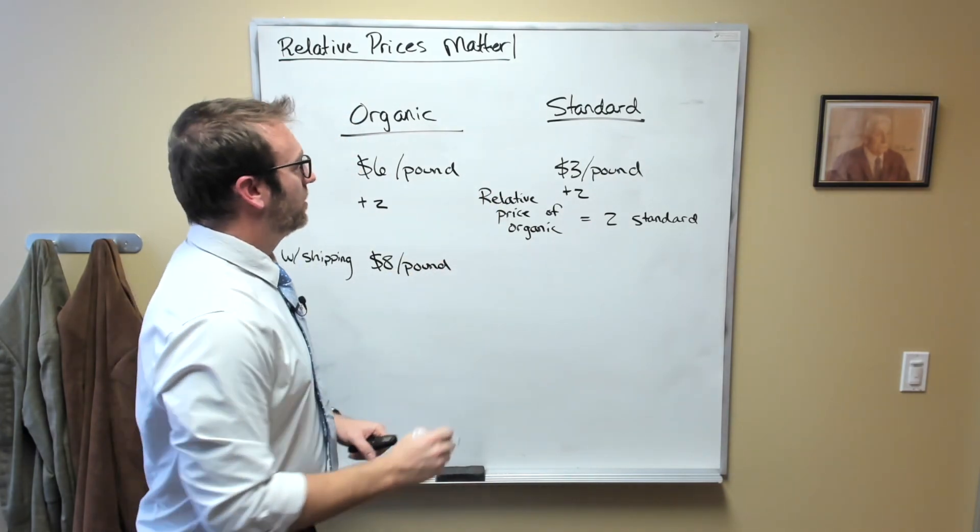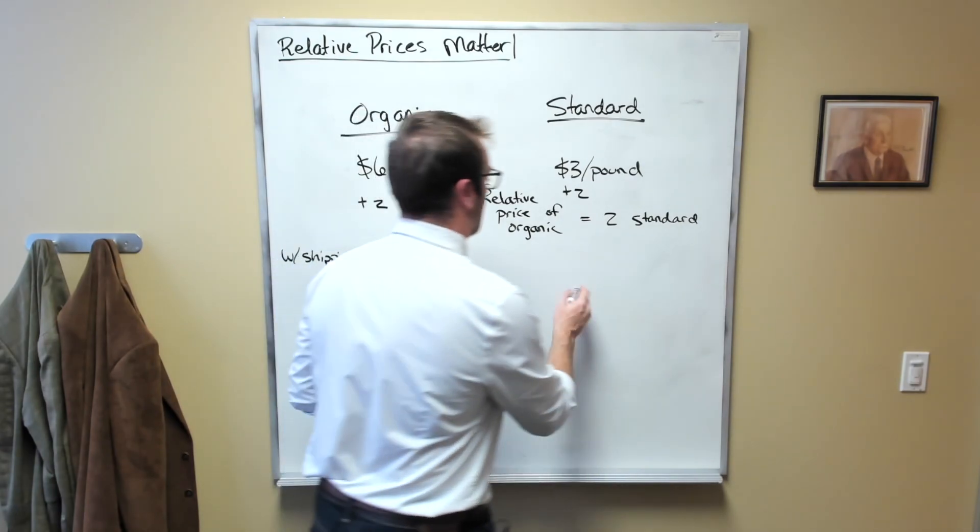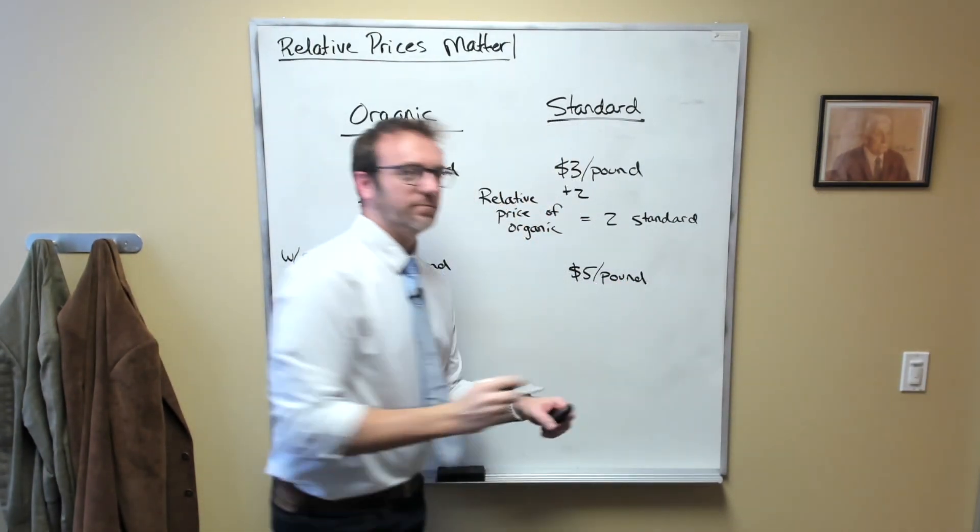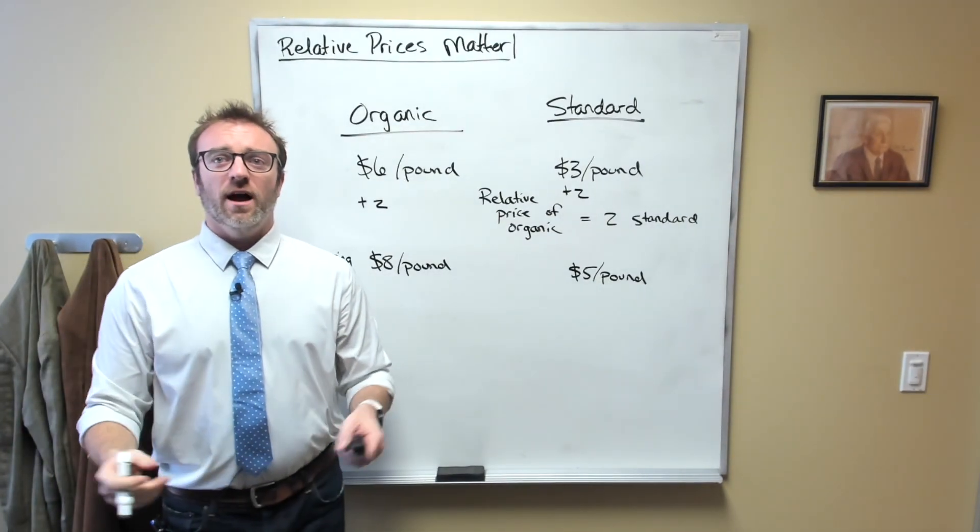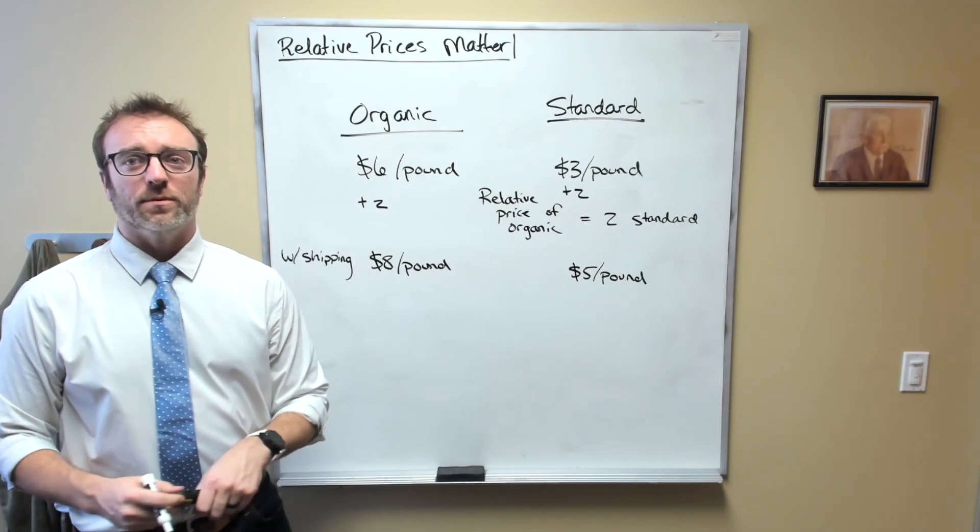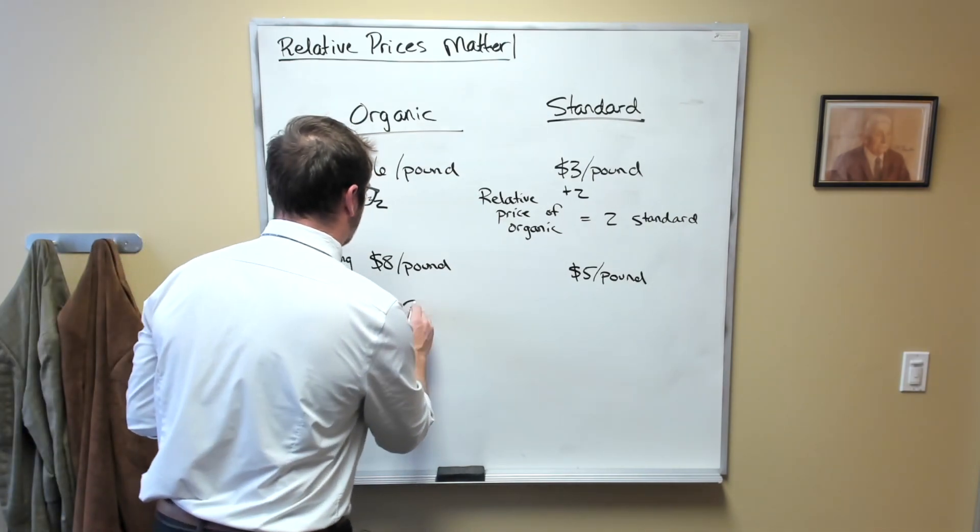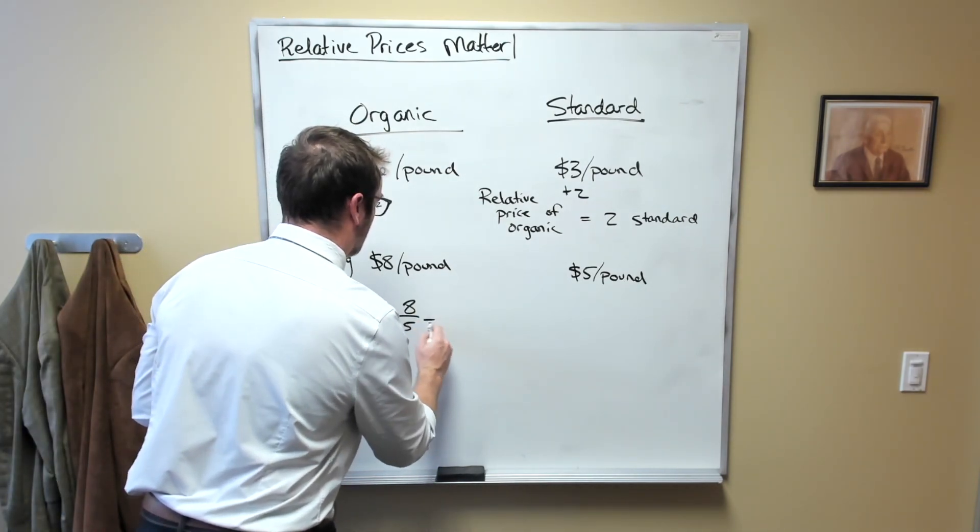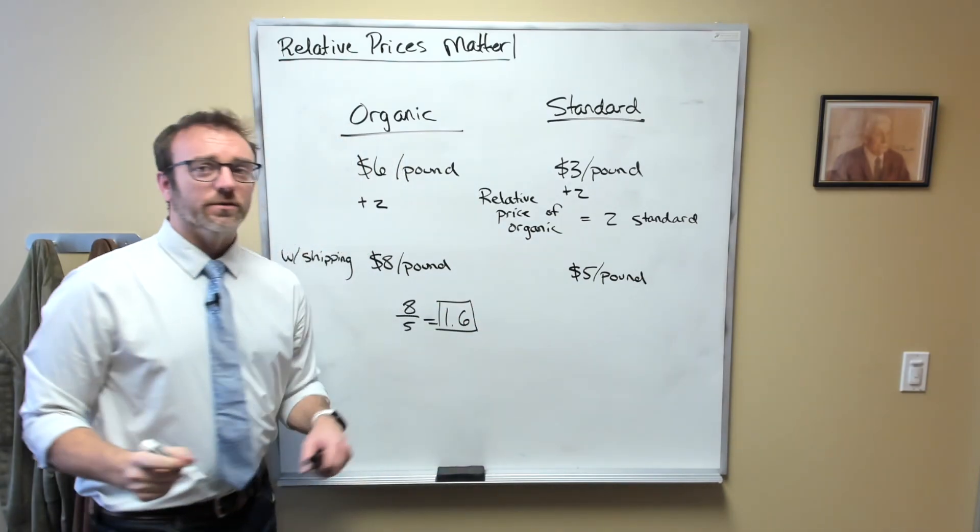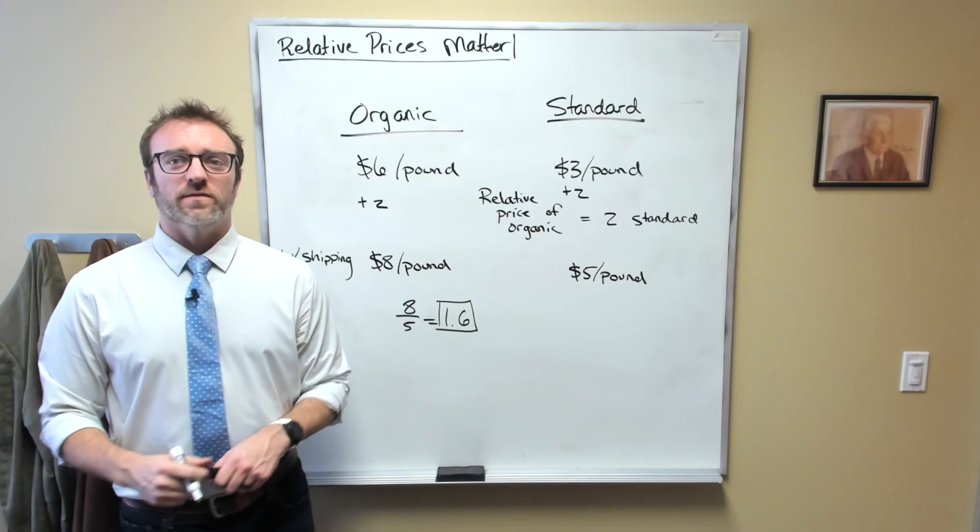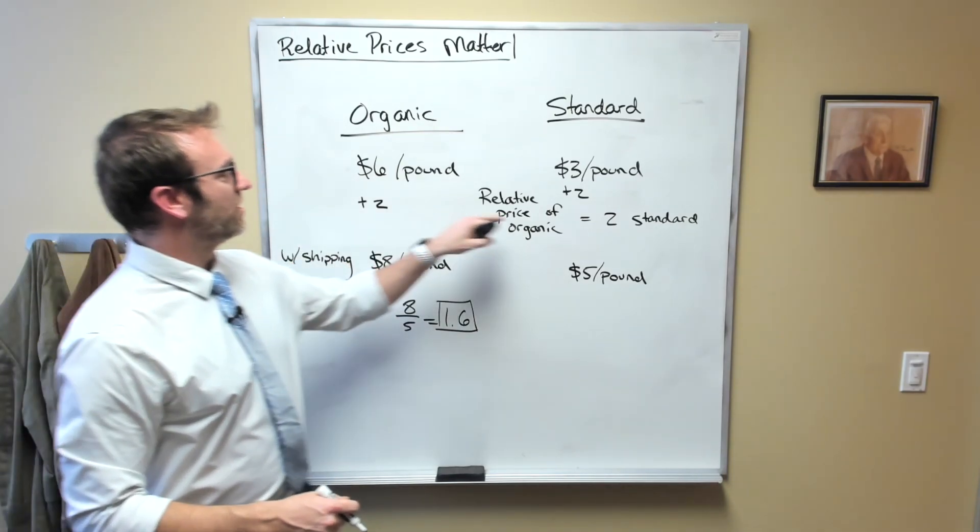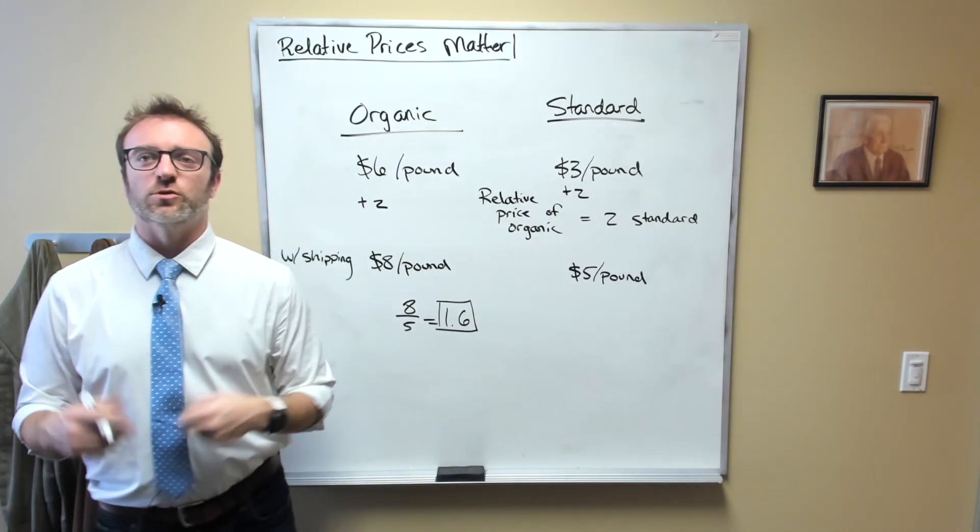With shipping, the total price of standard apples would be $5 per pound. Now, if we calculate the relative price of organic apples, we would notice that 8 divided by 5 equals 1.6. In other words, the relative price of organic apples has fallen because of the addition of a fixed cost to both goods.